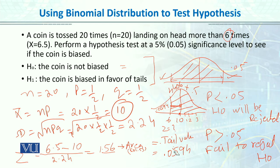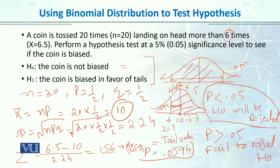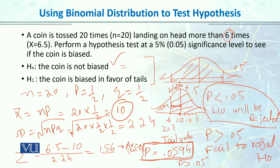We said that if p-value is smaller than 0.05, the null hypothesis would be rejected. However, our p-value is 0.0594, which is greater than 0.05. Therefore we fail to reject the null hypothesis. Our conclusion is that the coin is not biased — the coin is fair. But if the p-value had been smaller than 0.05, we would definitely have concluded that the coin is biased.